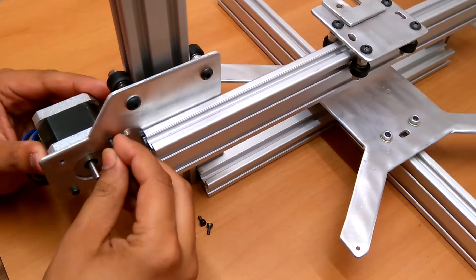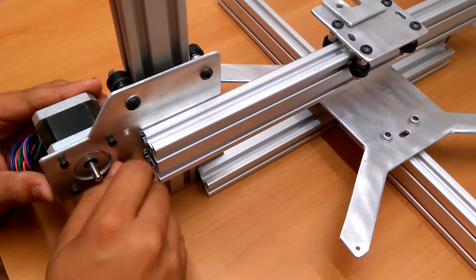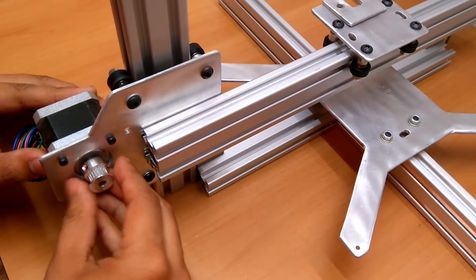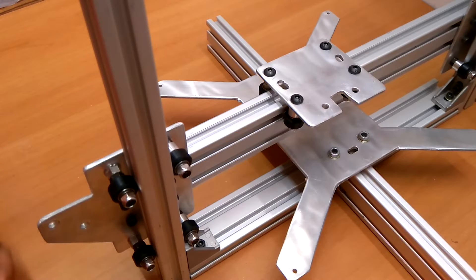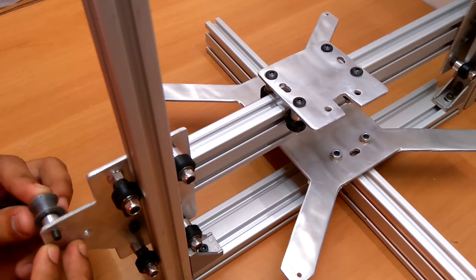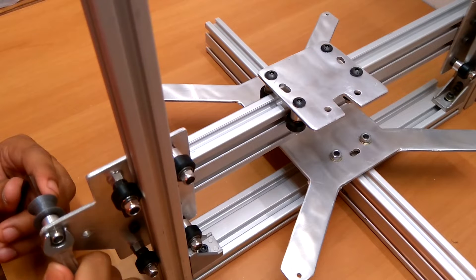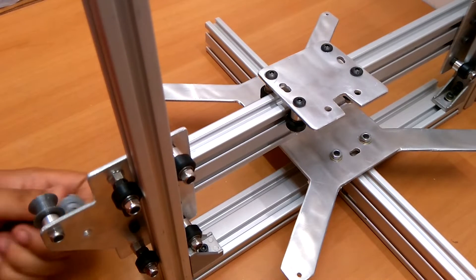I followed the same procedure for the x-axis stepper motor, mounted the motor, attached the GT2 pulley to the shaft, and fixed 5 mm pulley to the mount plates and tightened them using nylock nuts.